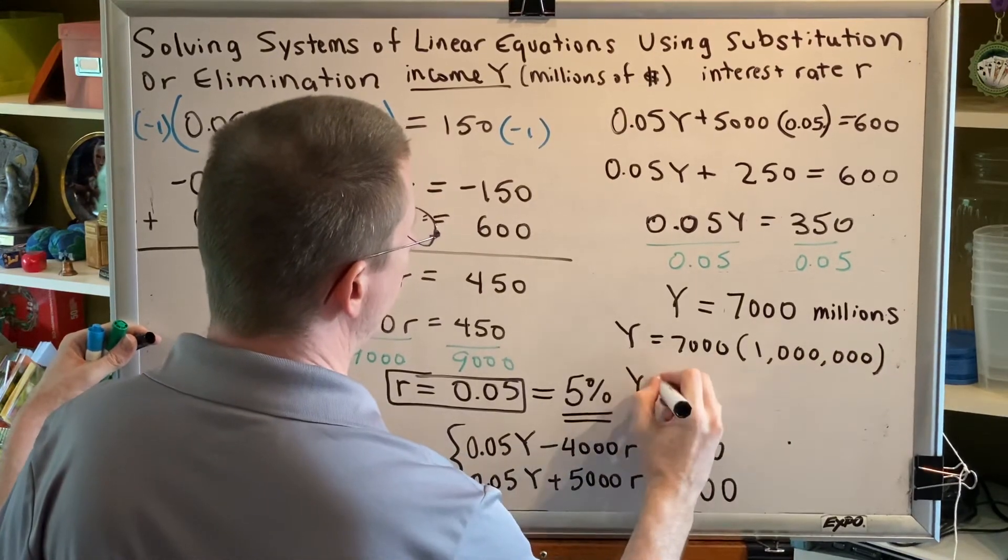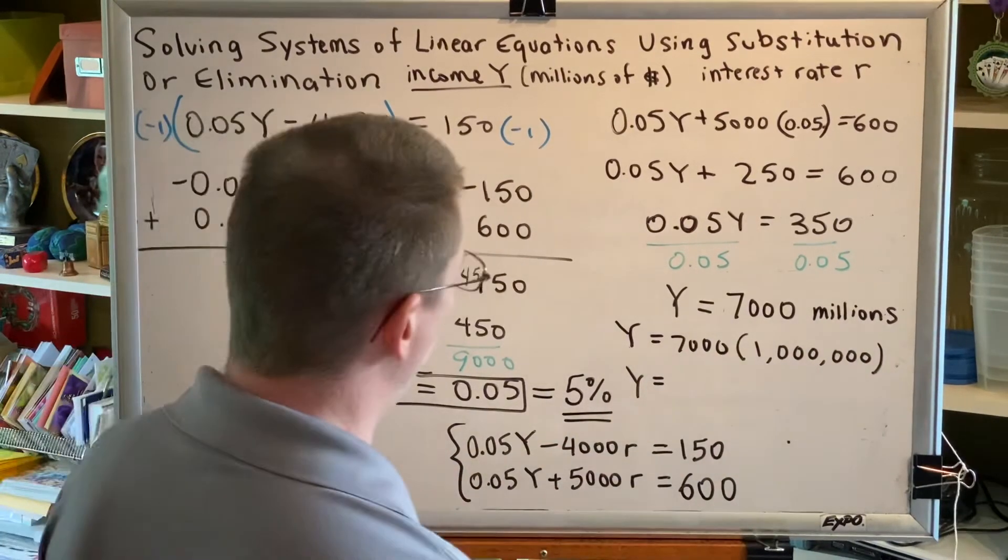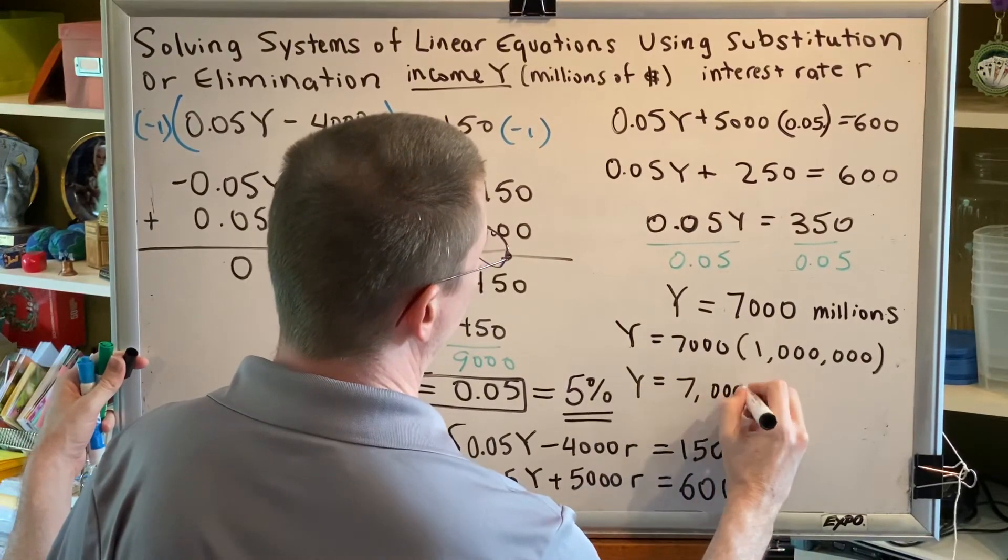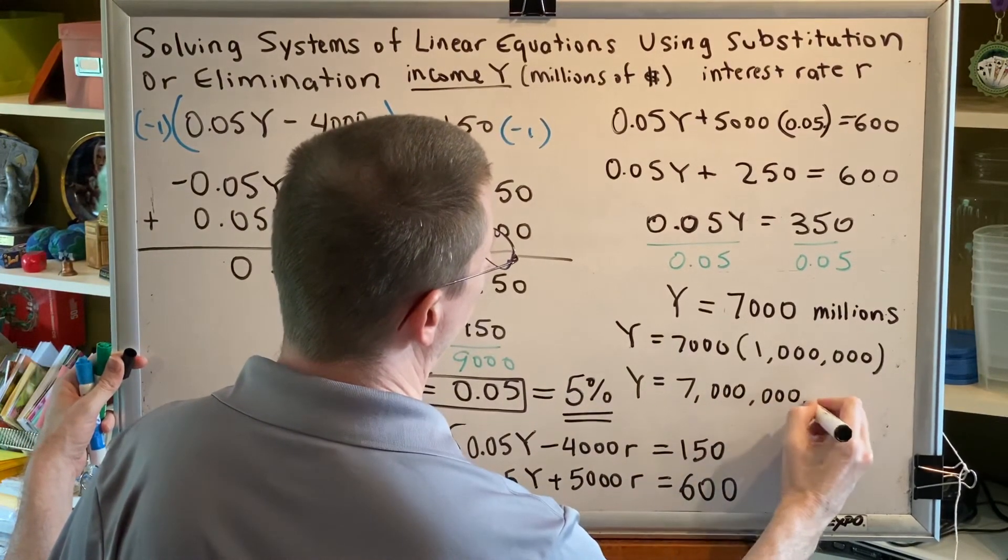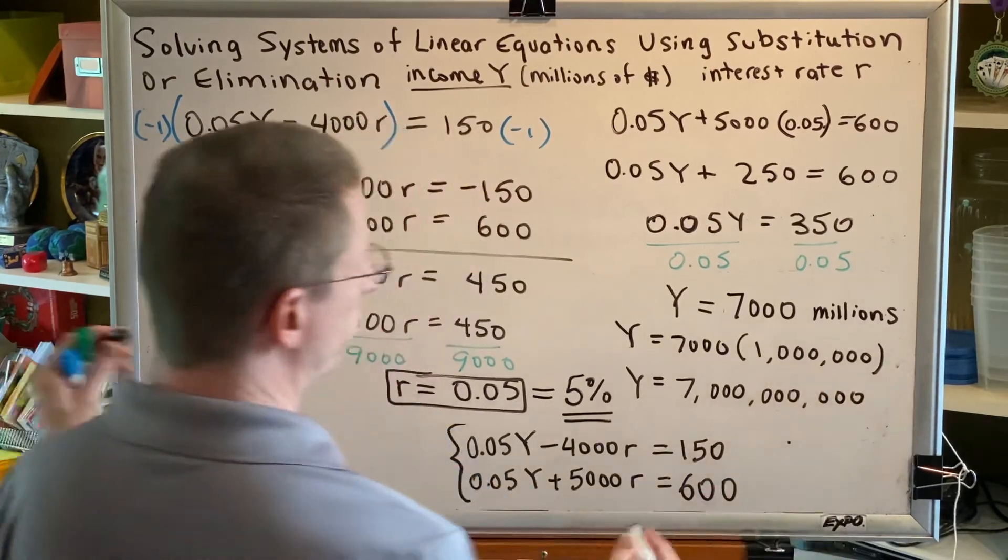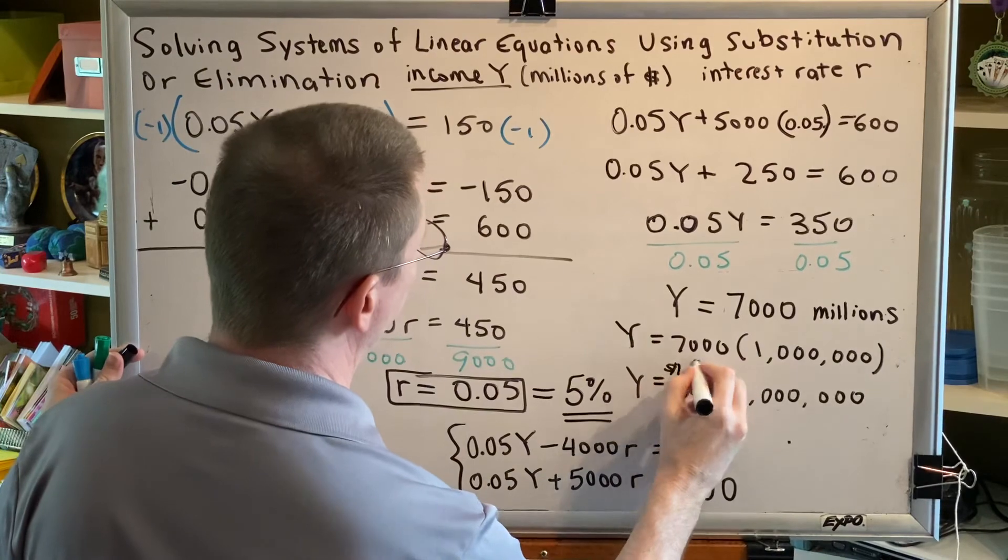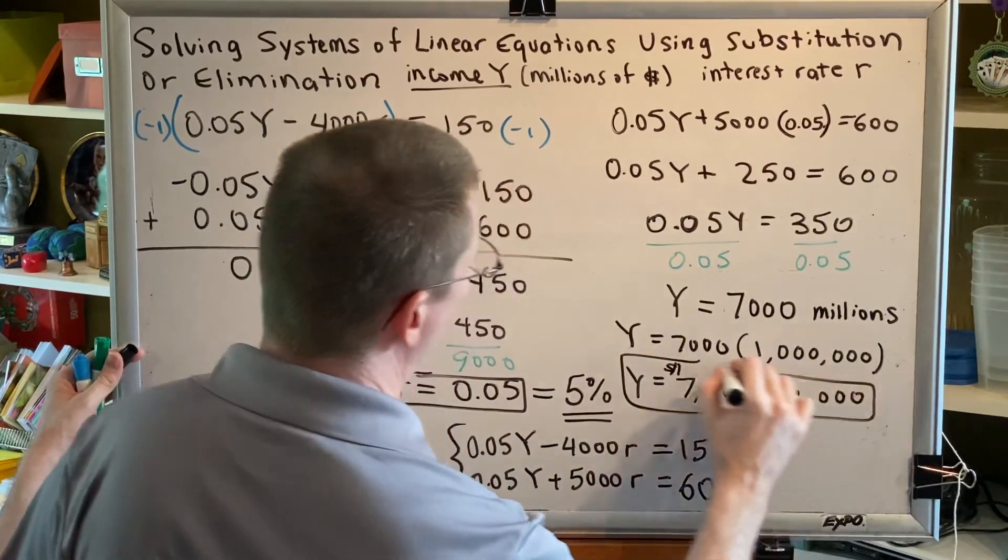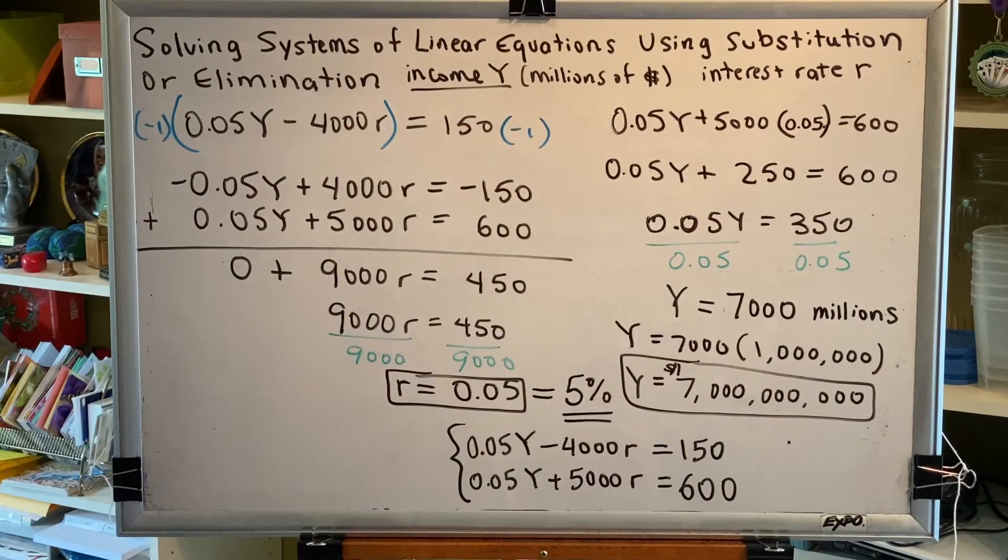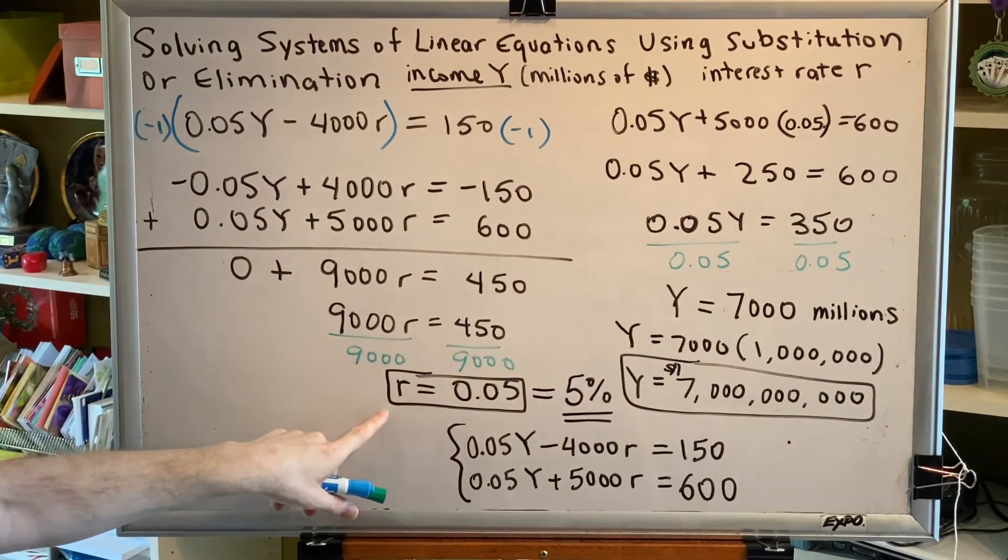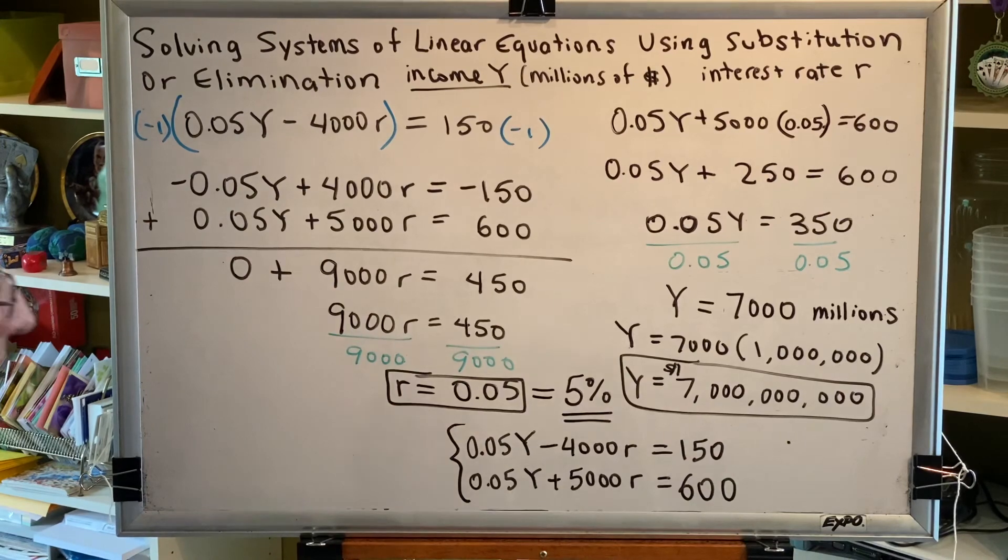One easy way to do that is to recognize that the word millions is equivalent to the number 1 million. And if we were to multiply these together, we would get 7 billion. So the income in this particular economy is 7 billion dollars and the interest rate is 5%.